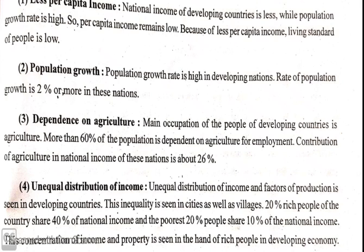The fourth feature is unequal distribution of income. Taking India as an example: someone who works more hours earns less salary, while someone who works fewer hours earns more. For instance, a bank peon works 8-9 hours and earns around 10-15,000, while the bank manager works 5 hours and earns 40-50,000. Such cases are very common in India.